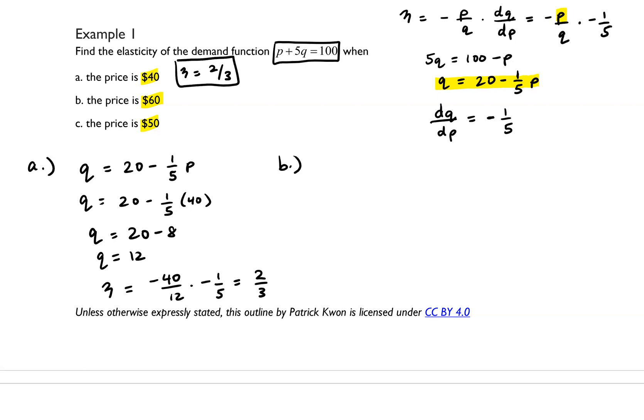Let's do part b. We want to figure out q when p is equal to 60, and that gives us 20 minus 12, which is 8. So then eta is going to equal negative 60 over 8 times negative 1 fifth, and that gives us 3 halves.